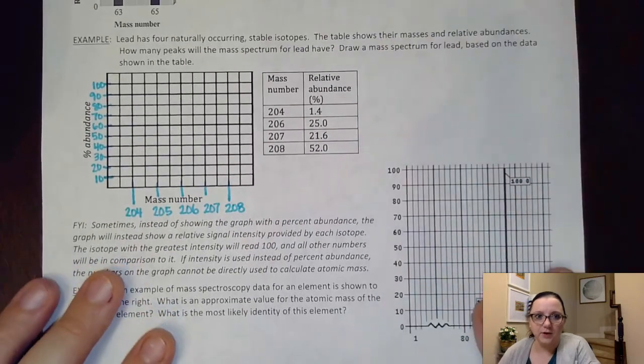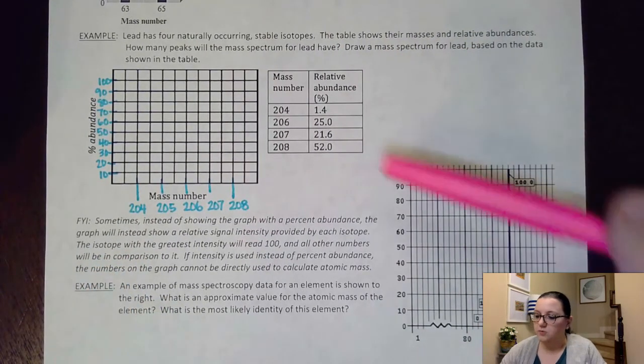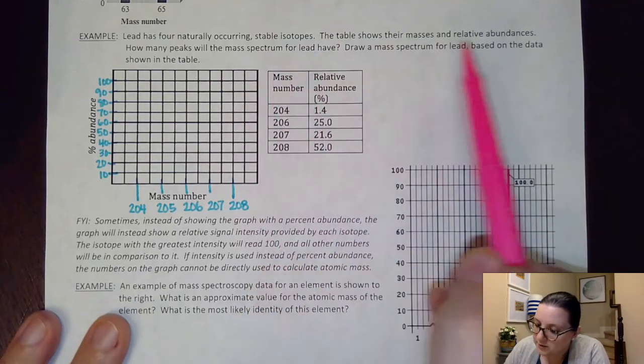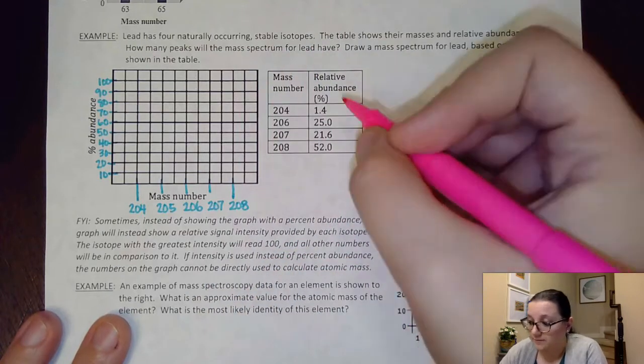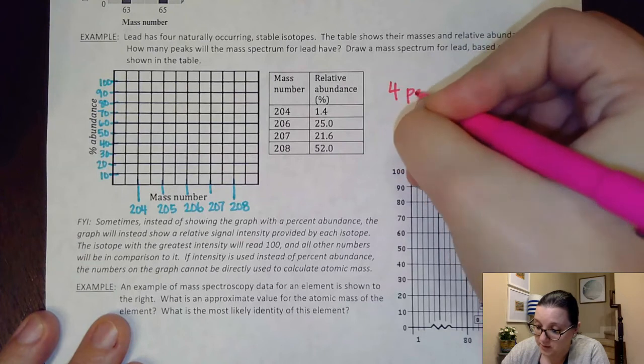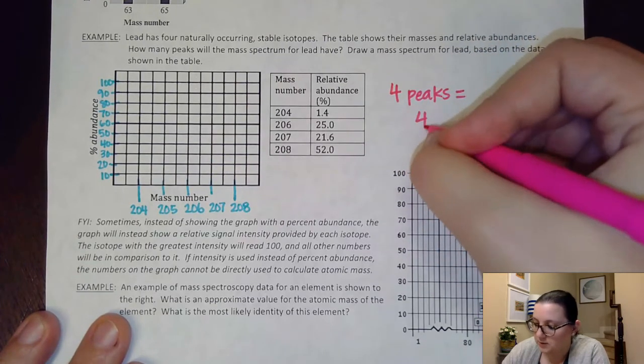What this particular question wants us to do is to actually translate the information over here into a mass spec graph to create a graph based on the information, okay? First off, it asks, how many peaks will the mass spectrum for lead have? Well, if I have four isotopes of information, then I'm going to have four peaks worth of information, right? Four peaks for the four isotopes.